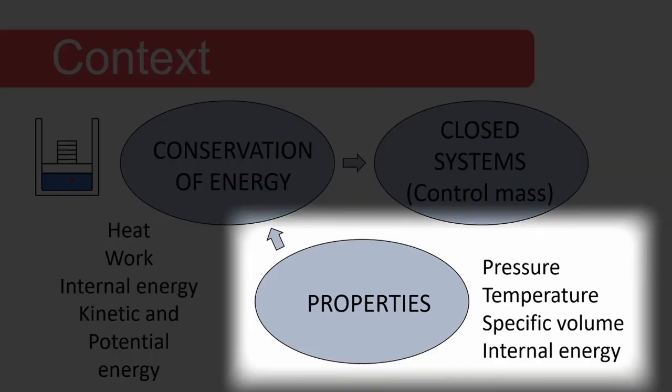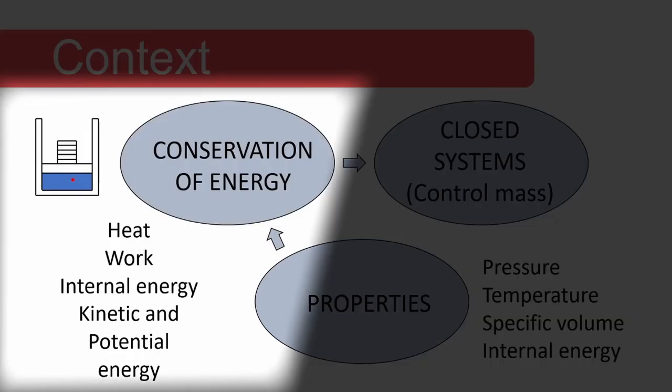We started with properties, which are used to describe the characteristics of substances. Initially we only discussed pressure, temperature, and specific volume, but later saw that internal energy is also a property. Then we encountered the concept of conservation of energy, which states that energy cannot be created or destroyed. This concept is formalized in the first law of thermodynamics. The forms of energy we considered were heat, boundary work, and internal energy.